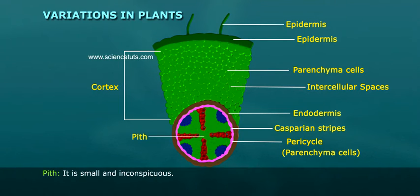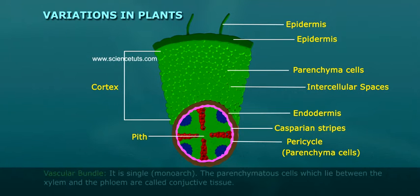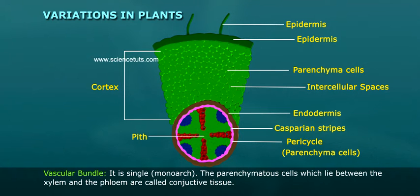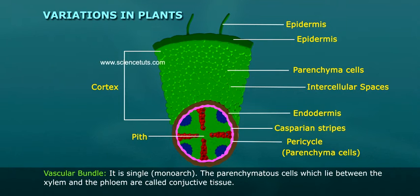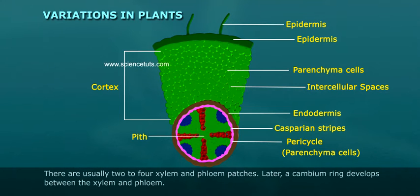Pith is small and inconspicuous. Vascular bundle is single monoarch. The parenchymeter cells which lie between the xylem and the phloem are called conjective tissue. There are usually two to four xylem and phloem patches.